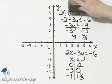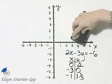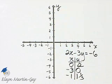Now let's plot those three ordered pair solutions, see if they all lie on the same line, and let's graph our equation.